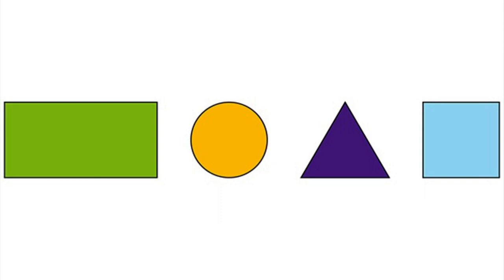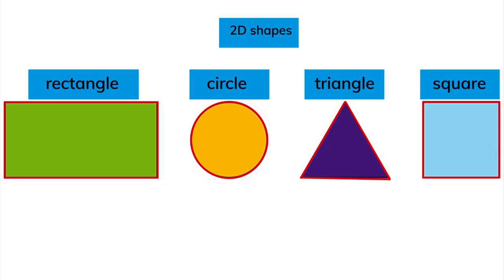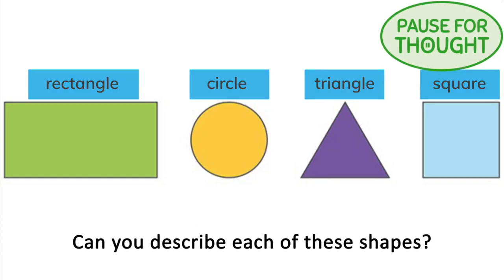You already know about four 2D shapes: the rectangle, circle, triangle, and square. Can you describe each of these shapes?